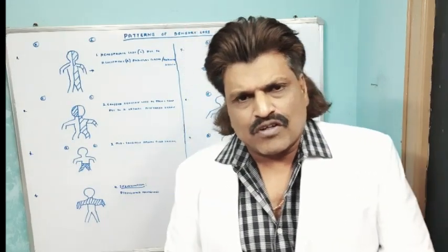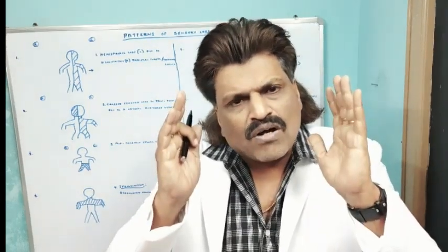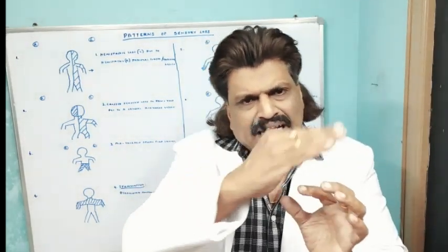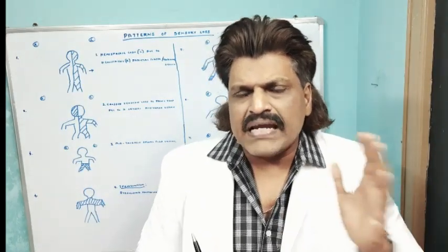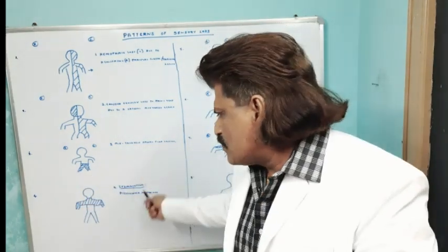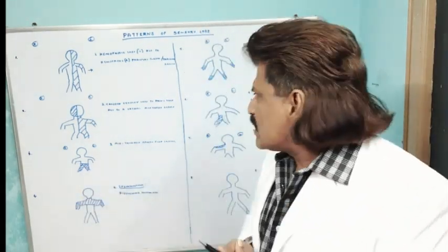The fourth is a very interesting phenomenon: pain and temperature sensations are lost but posterior column sensations are spared. Pain and temperature are carried by the spinothalamic tract, while joint position and vibration sense are carried by the posterior columns. A lesion in the center of the spinal cord affects the crossing spinothalamic fibers but spares the posterior columns — this is called dissociated sensory loss. We see this in syringomyelia, usually affecting the thorax and hands because the lesion is typically in the cervical region.